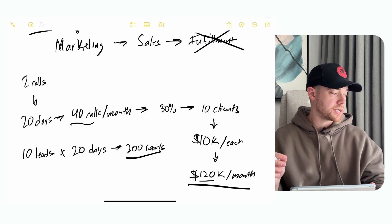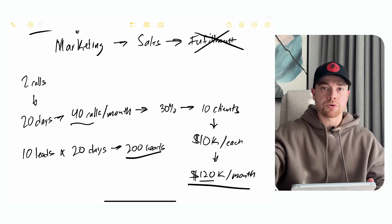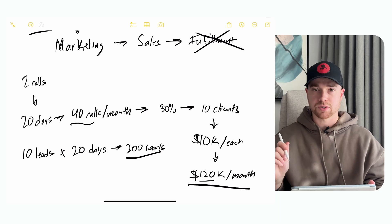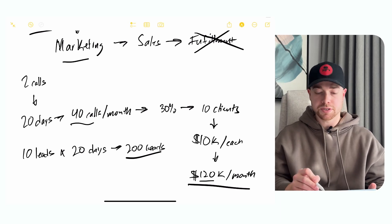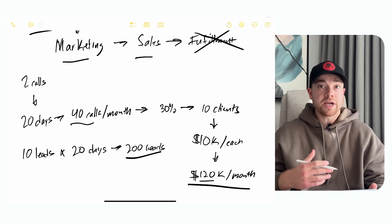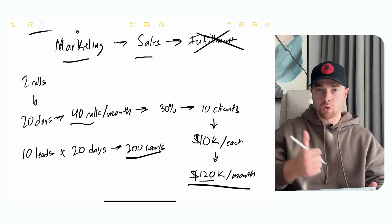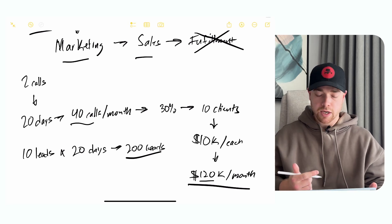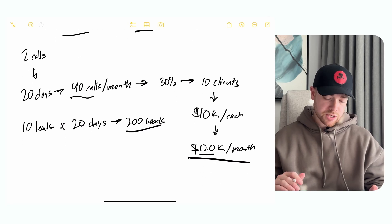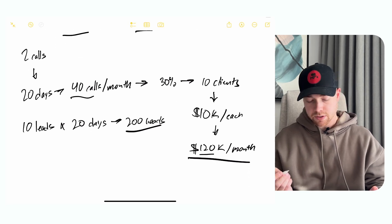And that's the thing: happy clients is not the problem or the bottleneck to your success to getting to $100,000 a month. It's literally just more marketing, more leads and more sales. You could get to 500K a month by just doing more marketing and more sales. And I think a lot of people don't think about that.